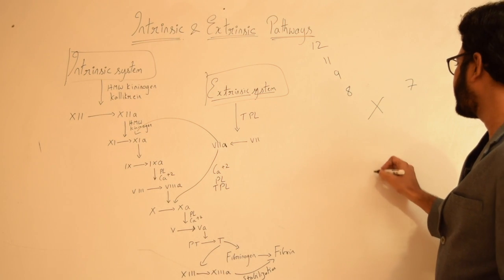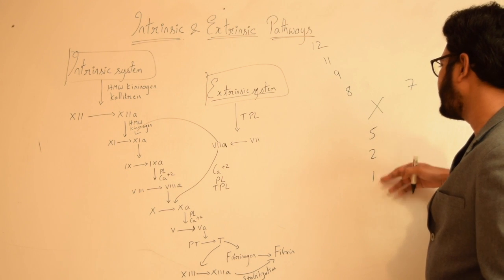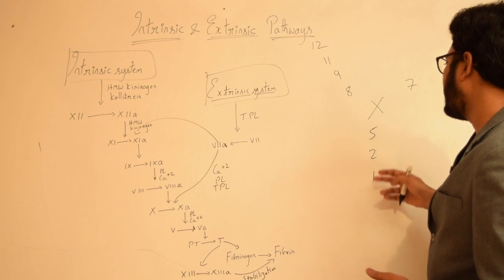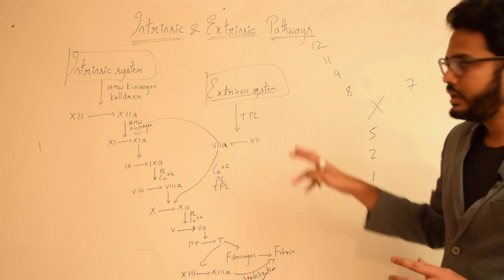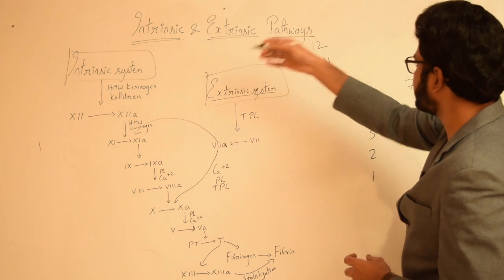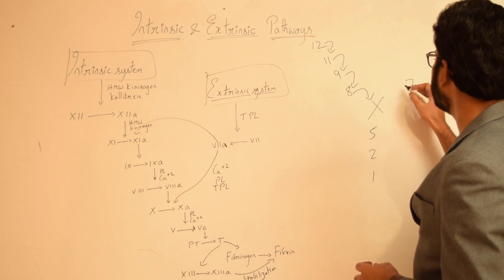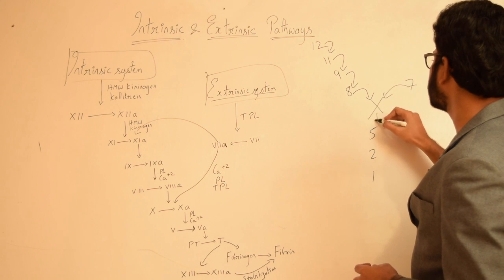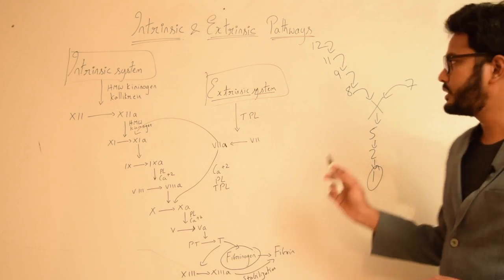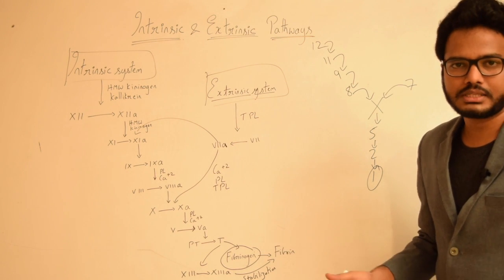From the bottom, write 1, 2, and 5 — because the product of 1, 2, and 5 is 10, so you'll remember these numbers automatically. This gives you the intrinsic pathway on the left (12 → 11 → 9 → 8 → 10), the extrinsic pathway on the right (7 → 10), and the common pathway at the bottom (10 → 5 → 2 → 1, i.e., fibrinogen). This is a simplified way of remembering the entire coagulation cascade.